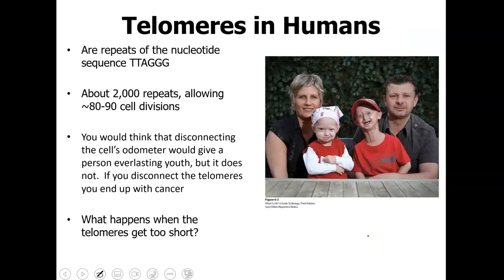Sometimes these telomeres in humans aren't going to be as long as they should be. Usually they're just a bunch of T's, A's, and G's put together — the usual nucleotide sequence, TTAGGG — and there are about 2,000 repeats of this, which allows for about 80 to 90 cell divisions per cell. Once it reaches that, it's going to go through its regulated cell death. You might think that disconnecting the cell's odometer would give a person everlasting youth, but actually it does not, because that's what keeps that DNA young and prevents degradation as it goes through mitosis.